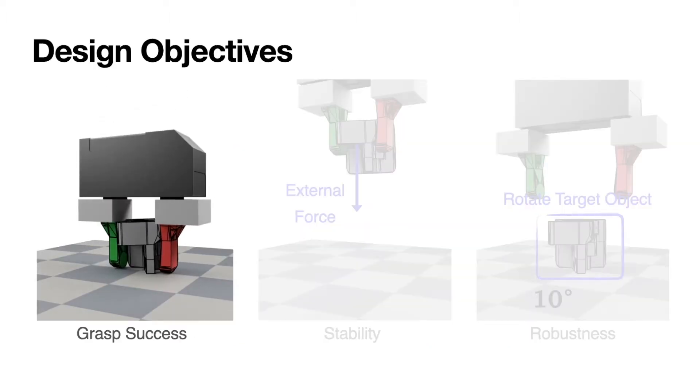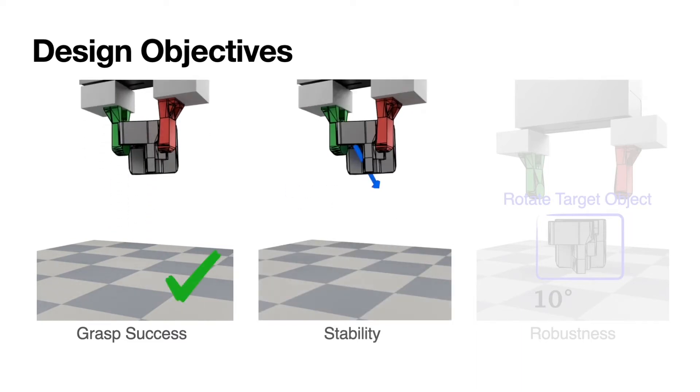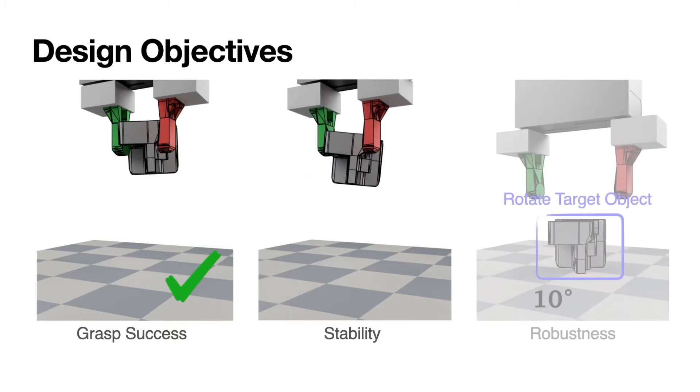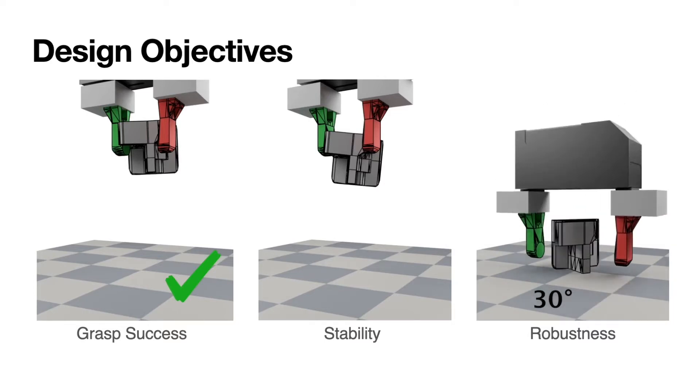First, the gripper should be able to successfully grasp the object. Second, it should be able to maintain the grasp under external forces. Third, the gripper should also be able to grasp the target object with perturbations in its orientation.